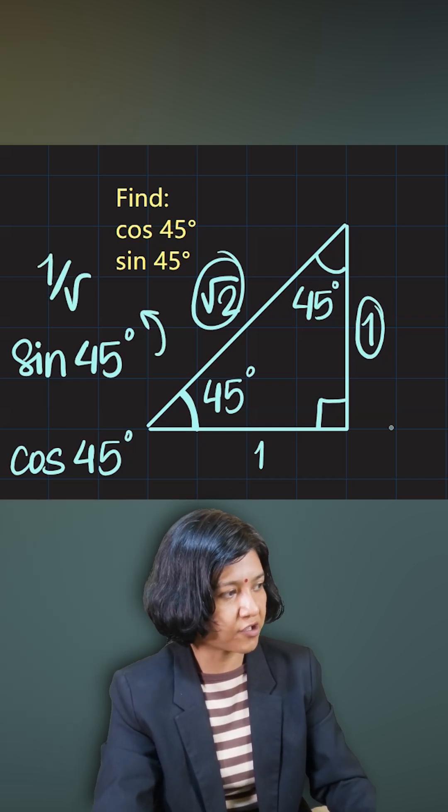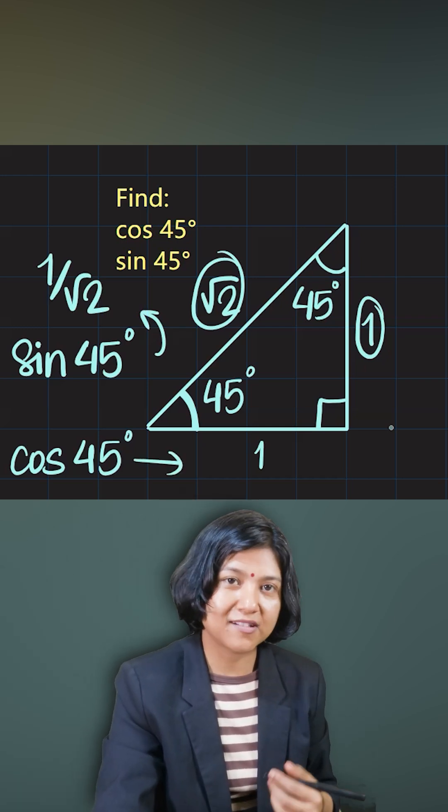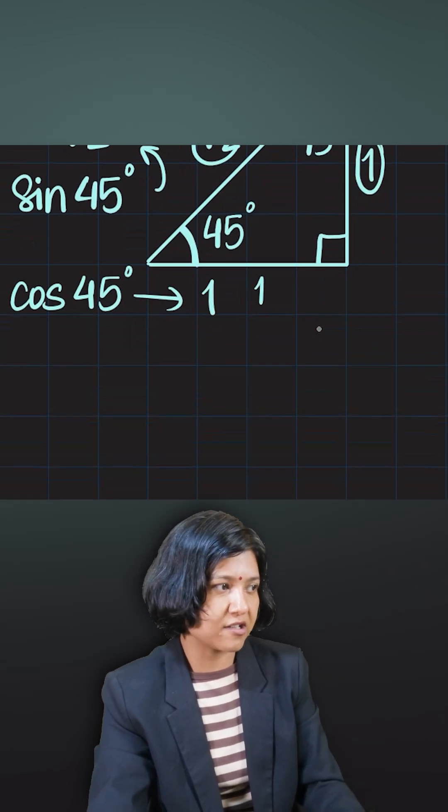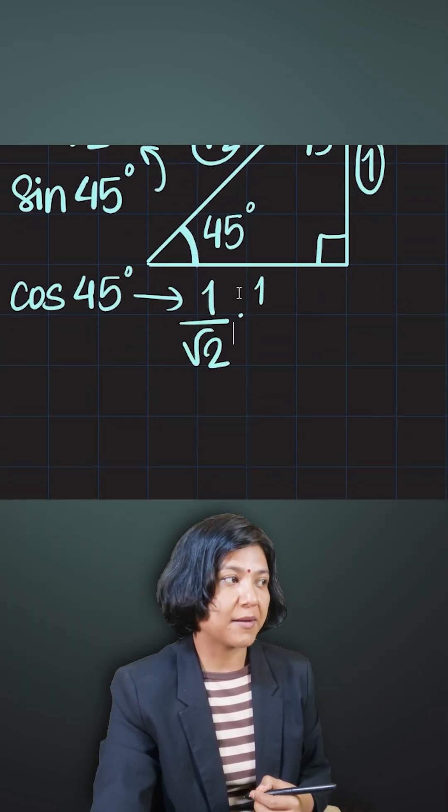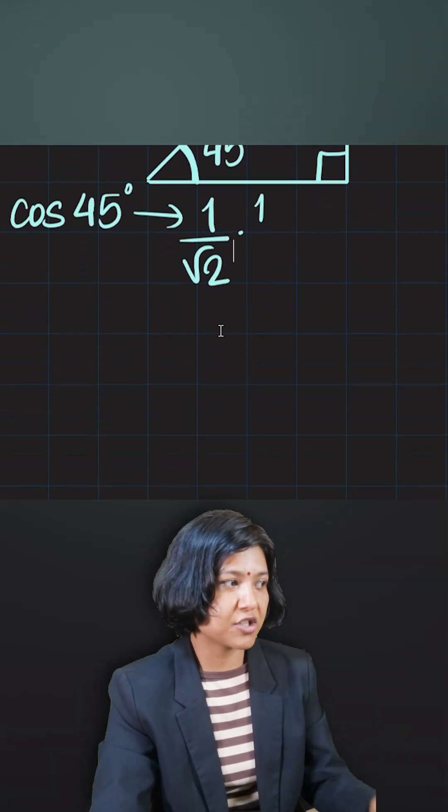Similarly for cos, you can do the same thing because both the base and the opposite have the same value. Here we'll still get the same answer as for sine, which is one upon root two. And hence you can remember that sine 45 and cos 45 do have the same value.